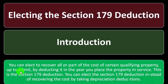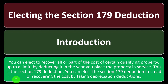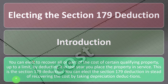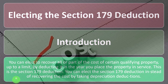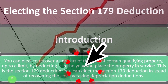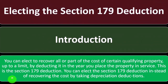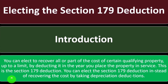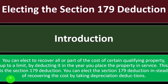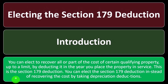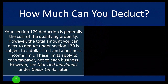Electing the Section 179 deduction — as a recap — you can elect to recover all or part of the cost of certain qualifying property up to a limit by deducting it in the year you place the property in service. So instead of depreciating it over time, the Section 179 deduction lets you elect to take the cost as a deduction in year one.